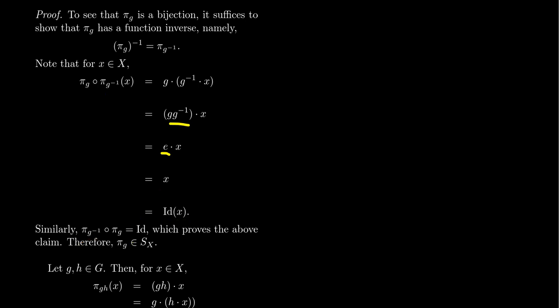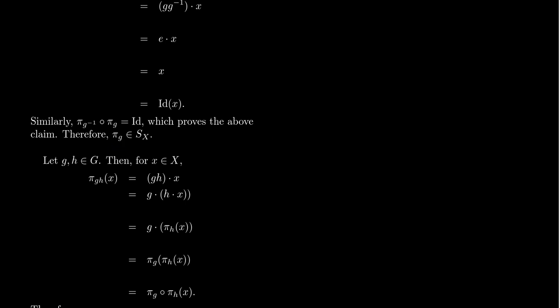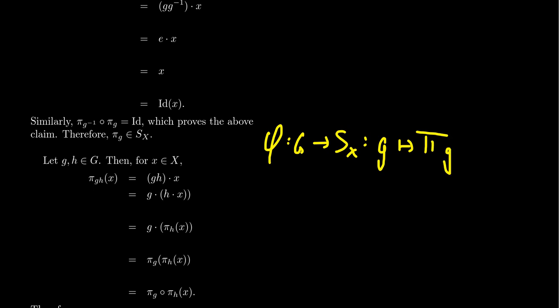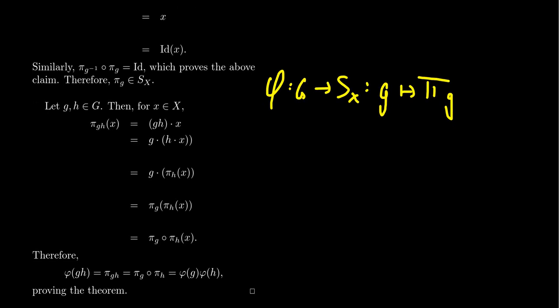This shows that π_g is in fact a permutation because it's bijective, so π_g belongs to the group S_X. So we can identify g with its permutation in S_X — that's what φ does: φ sends G into S_X such that the element g is identified with π_g. So we have a function from one group into another group. We now have to prove the homomorphic property, that multiplication is preserved.